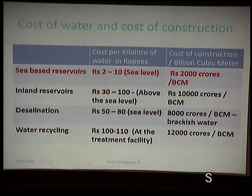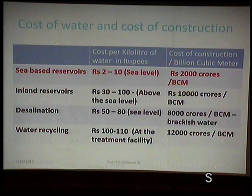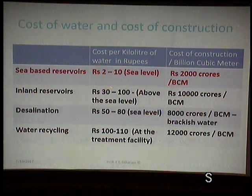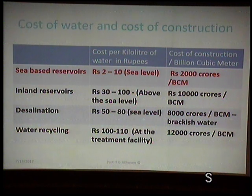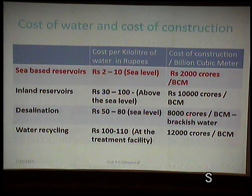When compared to the inland reservoir, the only advantage of an inland reservoir is that from it you don't need to pump — the downstream can be served by gravity. However, the water cost is over 30 to 100 rupees. Being above sea level means most downstream areas can be fed without pumping, but it costs around 10,000 crores per billion cubic meters at current rates.